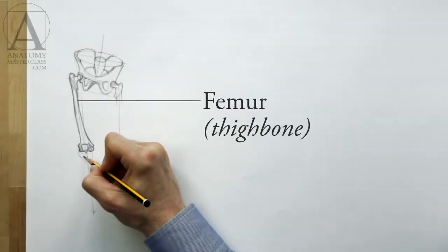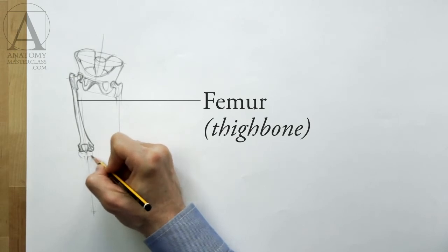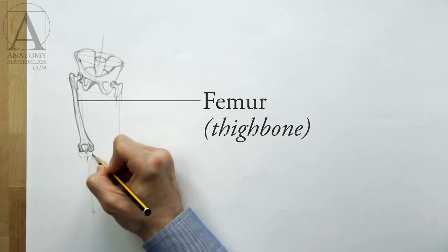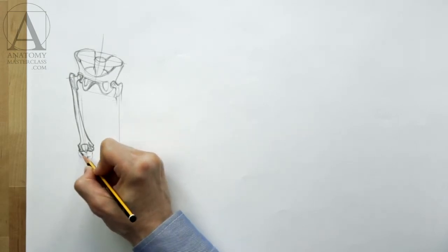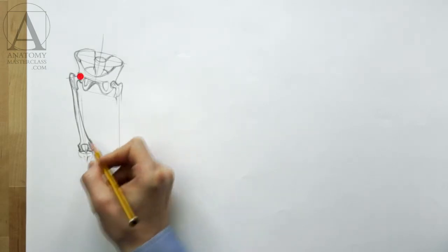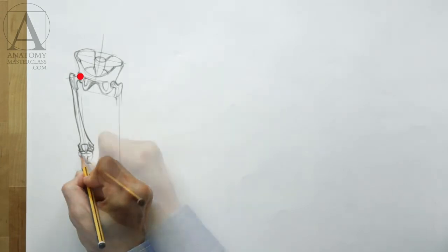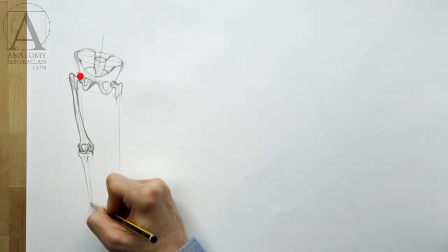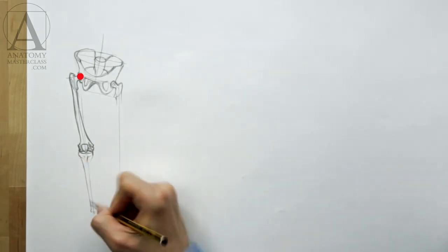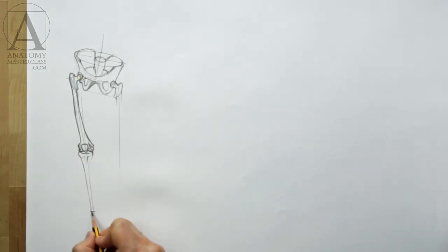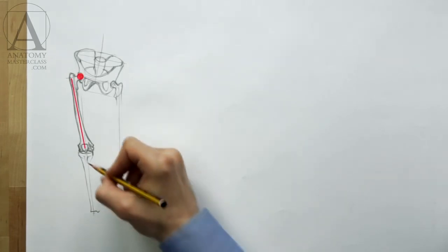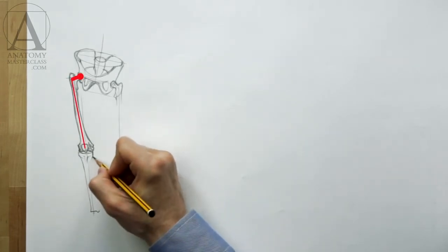The femur is the largest bone in the human body. It has the following structure. At the very top, there is a head. This head is part of the ball and socket hip joint. The head of the femur is connected to the bone's shaft via the neck.